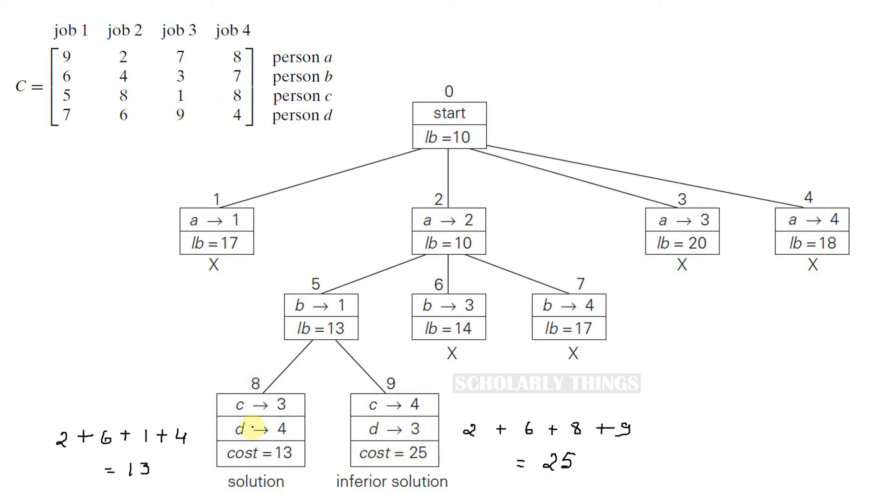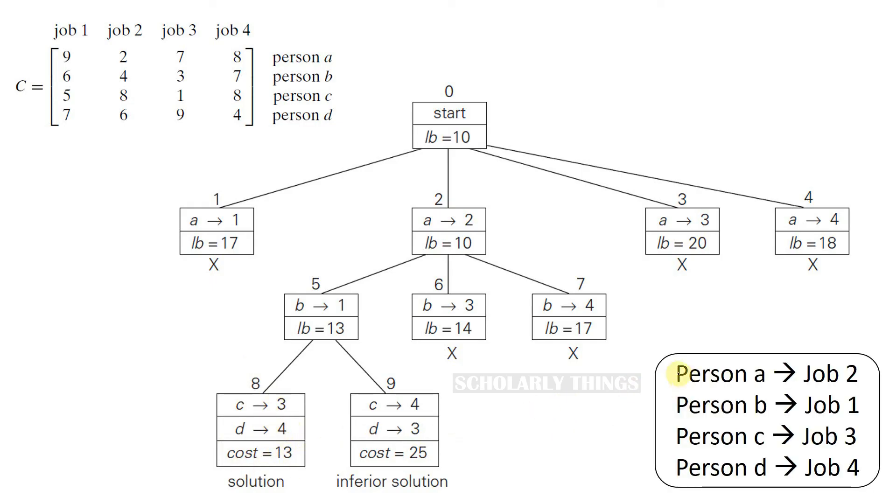At this stage at node 8, we can clearly see that we found the optimal solution. That is to assign person A to job 2, person B to job 1, person C to job 3, and finally person D to job 4. This is how we solve job assignment problem using branch and bound.